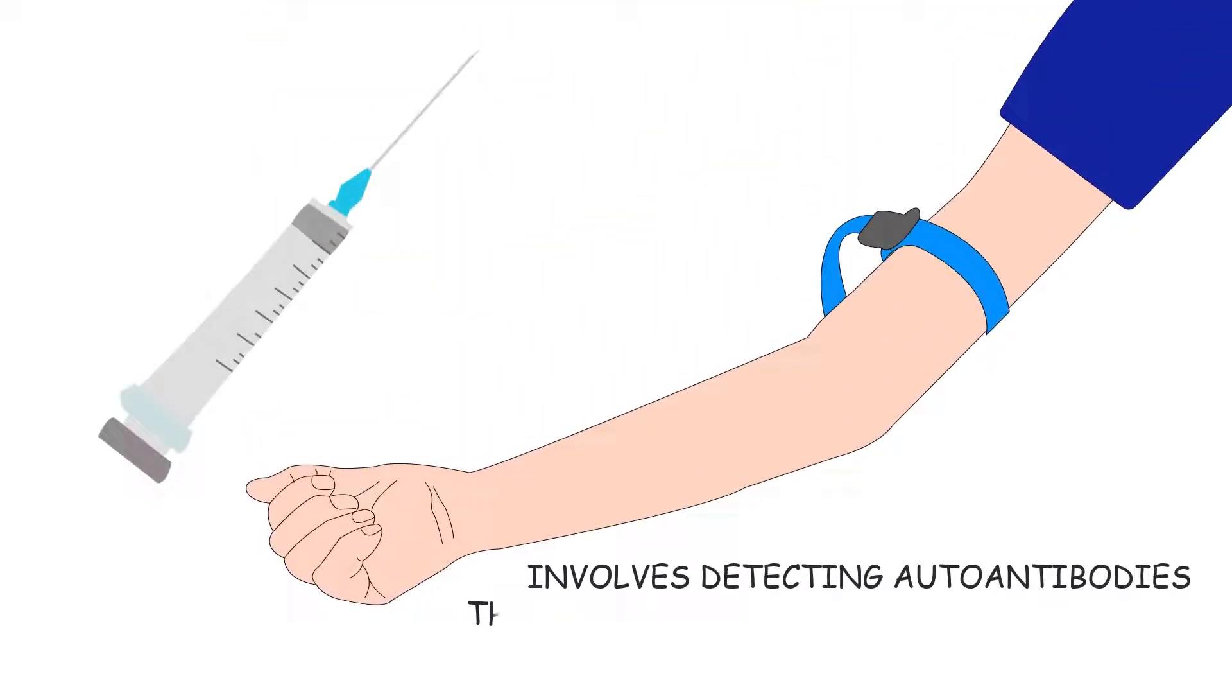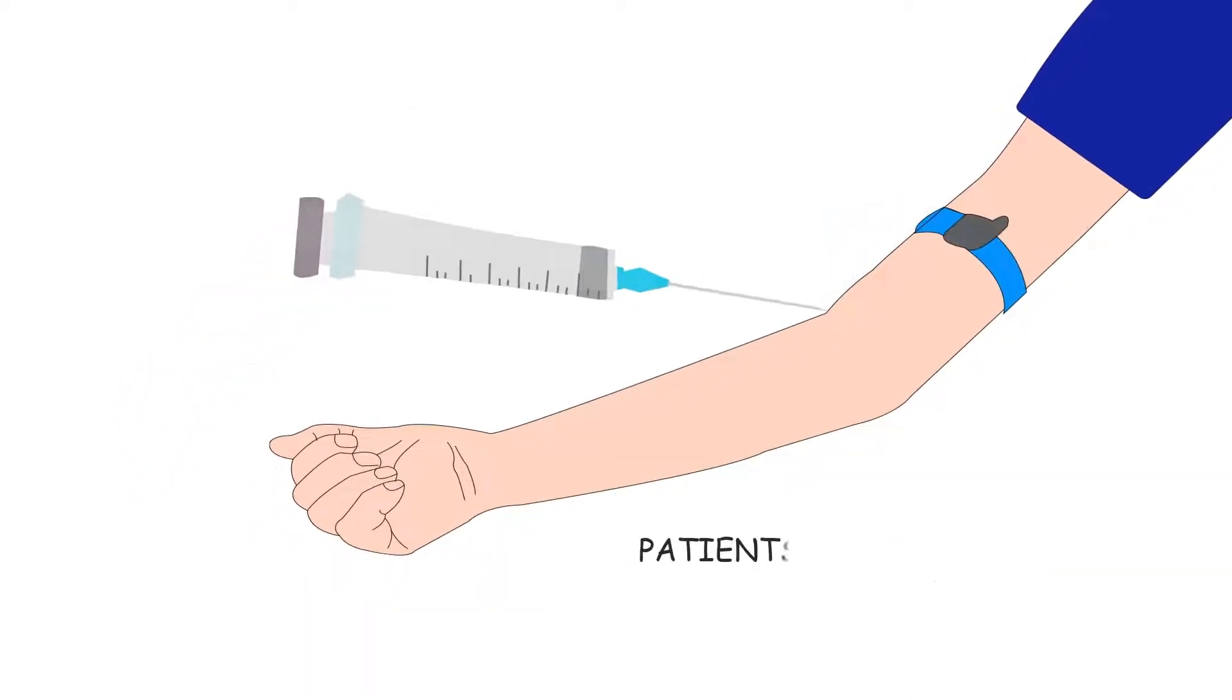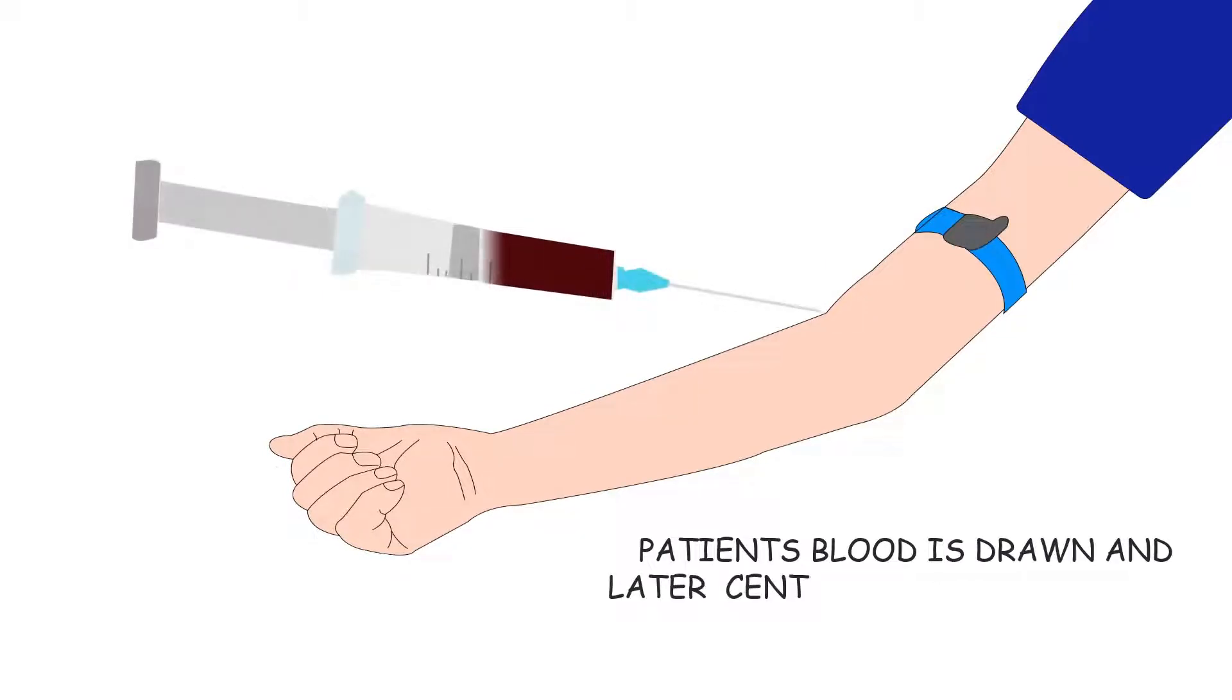Indirect immunofluorescence involves detecting autoantibodies that are circulating in patient's blood. Patient's blood is drawn and later centrifuged to separate the serum.